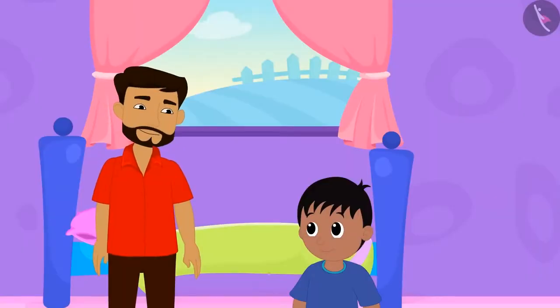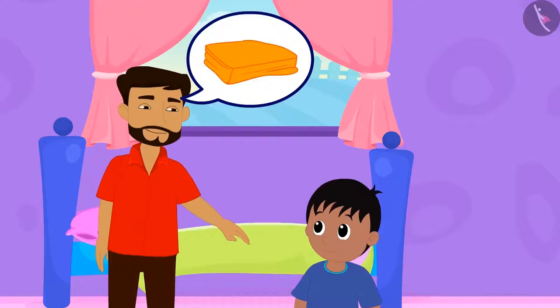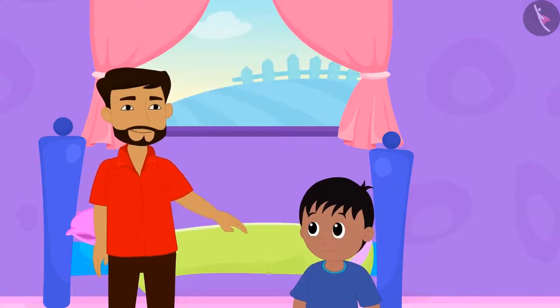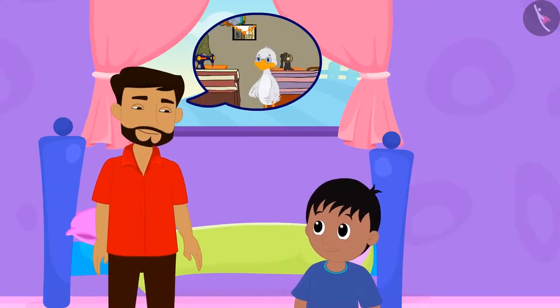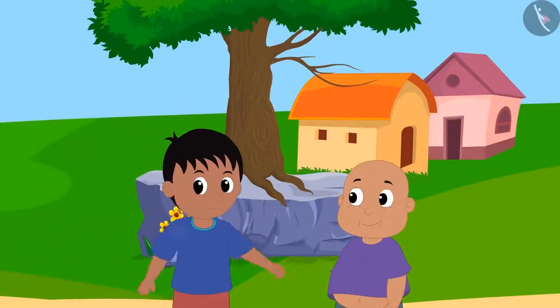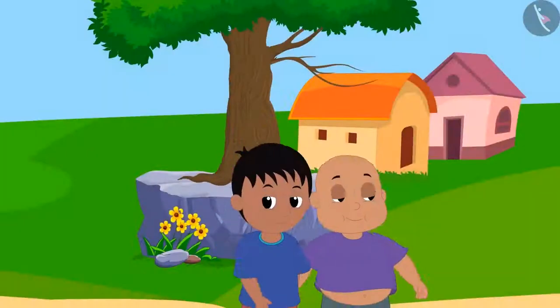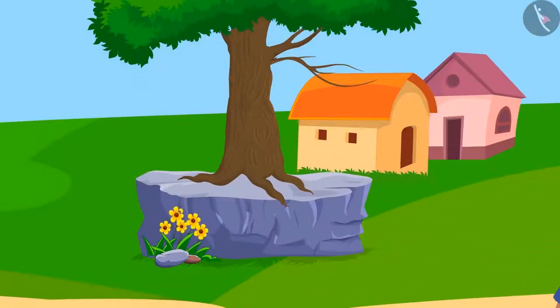Raju's father asks him to bring a piece of cloth for his shirt from the uncle's shop. On the way, Raju met Bablu and they went to the park to play.